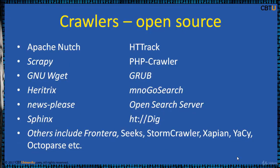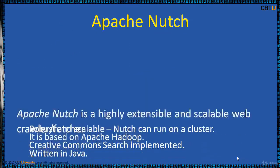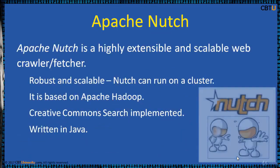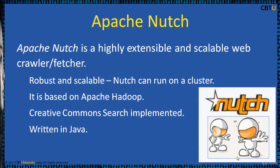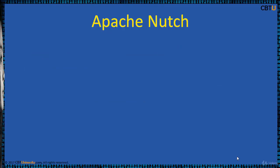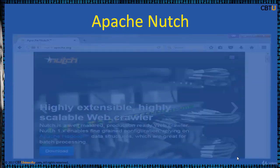Open source crawlers include Apache Nutch, Scrapy, HTTrack, PHP Crawler, and many others. Apache Nutch is a highly extensible and scalable web crawler. It is based on Apache Hadoop and can be used with Apache Solr and Elasticsearch. It is written in Java, robust, and scalable, and can run on a cluster. Nutch originated with Doug Cutting and Mike Cafarella. Doug Cutting is the creator of both Lucene and Hadoop.